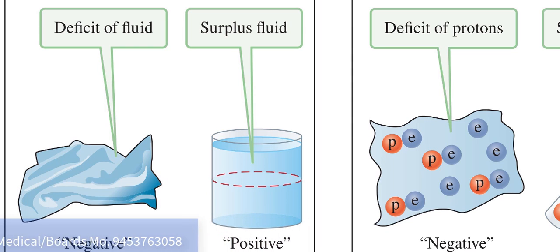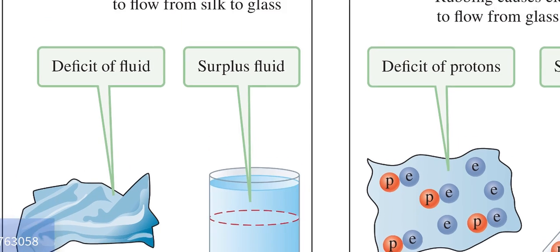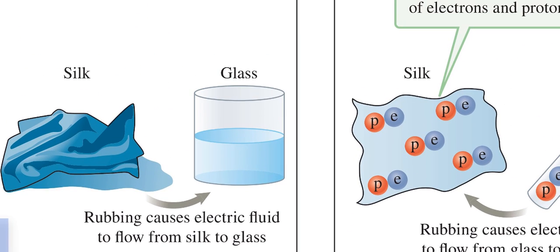According to Franklin, both a glass rod and a silk cloth have some amount of electric fluid initially. And after they are rubbed together, some of the electric fluid is transferred from the silk to the glass.